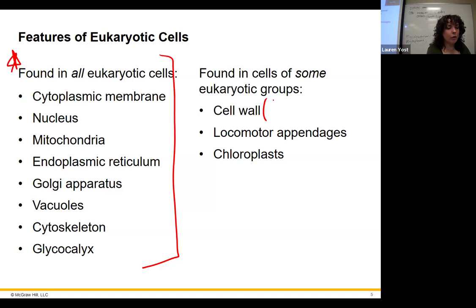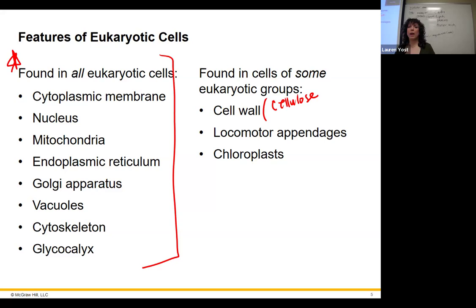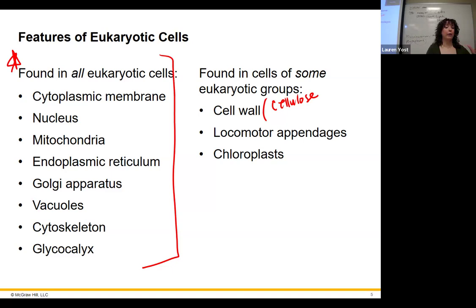Some eukaryotes have a cell wall. Plants have a cell wall made of cellulose. We talk about needing more fiber in our diet — a lot of the time that's cellulose, like from Metamucil. We can't break down the fiber ourselves, but bacteria in your gut can. It helps bulk up your stool and is supposed to be good for you. That's basically what fiber is — cellulose. We can't break it down properly on our own. Plants and some fungi have it too.